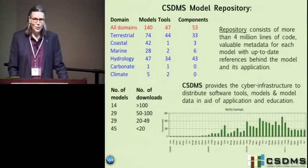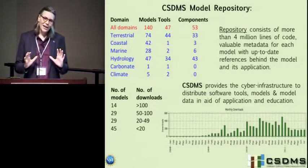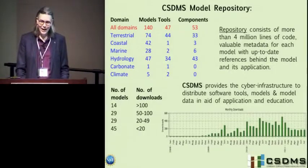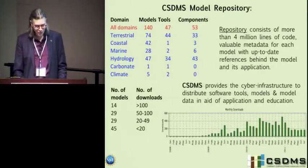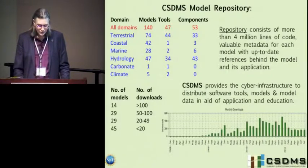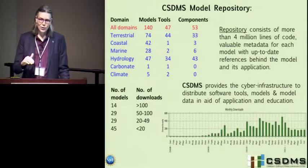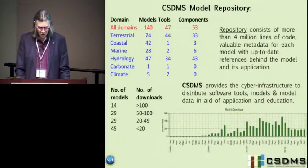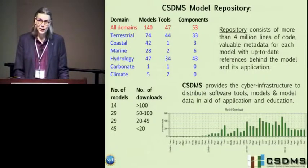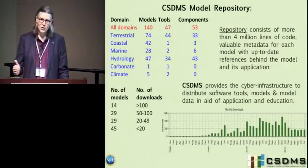Where are we with our model repository? The numbers keep growing, and with growth comes extra work. We have about 140 numerical models you can download — all open source and freely available. We send some downloads to other sites because those communities want to track usage, such as ROMS. We offer 140 models through our own repository, but there are others you can still access through our site while downloading and registering through another site.